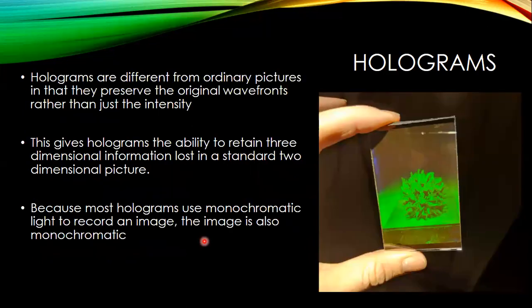With a hologram, we retain this three-dimensional information. A hologram basically preserves the wave fronts rather than just the intensity information. This gives holograms the ability to retain parallax in the horizontal and vertical directions, where we can actually see the object move as we change our perspective. If we move the hologram or our own location, the object will appear to also move as if it were a real object.